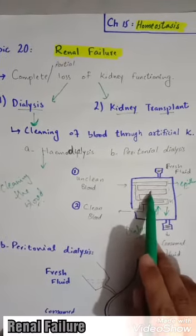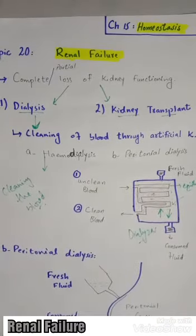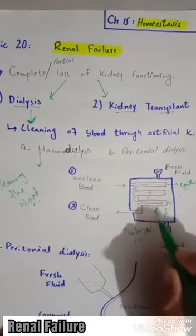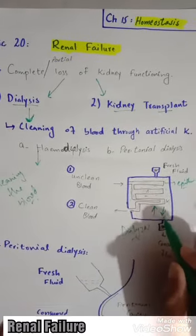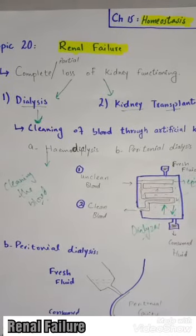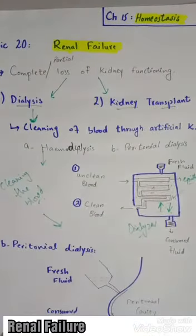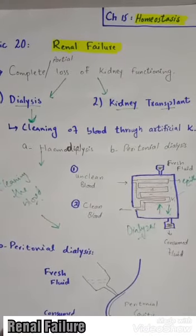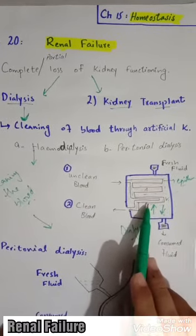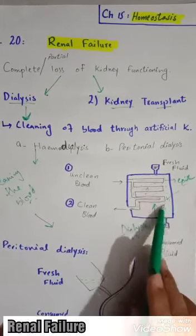The patient's blood contains high amounts of nitrogenous waste — ammonia, urea, and uric acid. The dialyzing fluid has very low amounts of these substances. So by diffusion, nitrogenous waste moves from higher concentration in the blood to lower concentration in the dialyzing fluid.